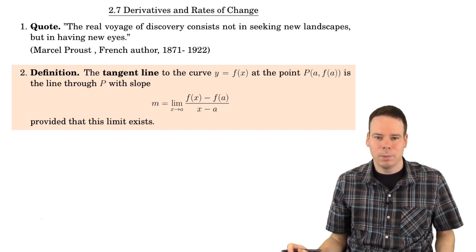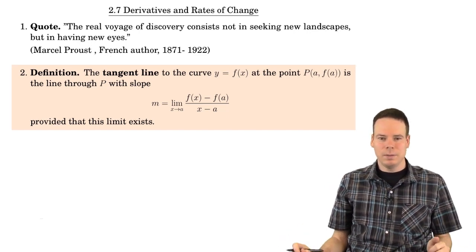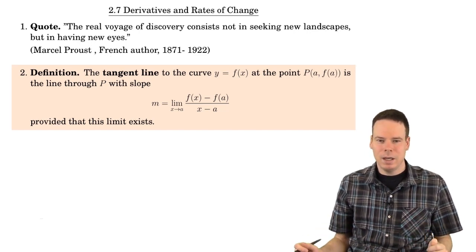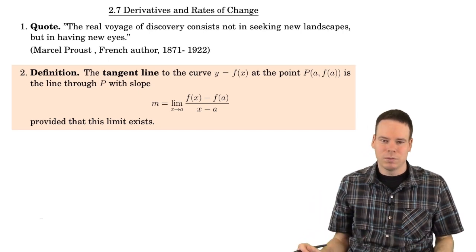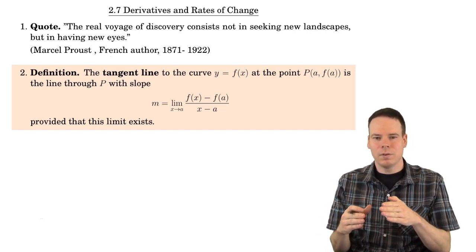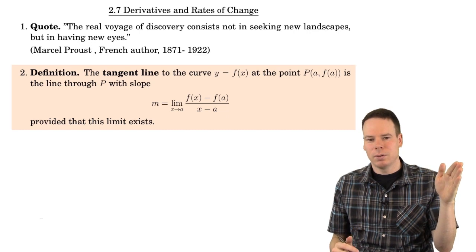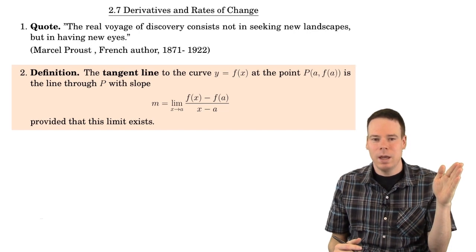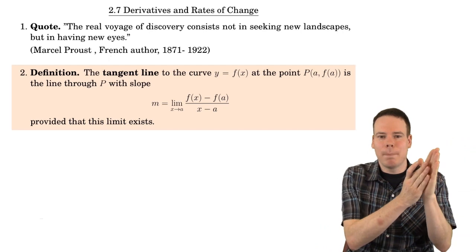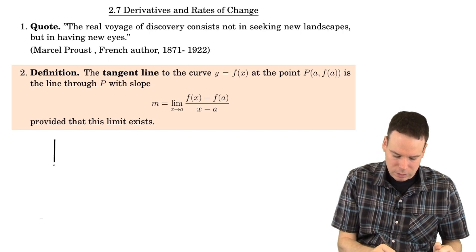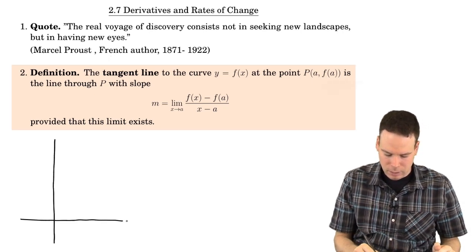In this video we're going to revisit the tangent line problem. We introduced it at least intuitively and then we sort of hit a roadblock. We said that in order to work out the slope of the tangent line we need to know how the slopes of the secant lines behave as the second point approaches the first point — in other words we hit this idea of a limit. So we introduced the concept of what a limit is and how to compute limits. Now we can come back and talk about the tangent line problem again.